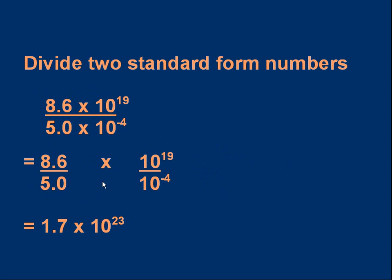For dividing standard form numbers, take 8.6×10¹⁹ divided by 5×10⁻⁴. Group the mantissas: 8.6 over 5, and group the powers of 10: 10¹⁹ divided by 10⁻⁴. 8.6÷5 is approximately 1.7. For the powers: 19 minus (minus 4) is 19 plus 4, giving 10²³. The final answer is 1.7×10²³.